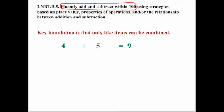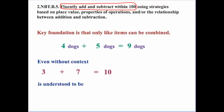For example, let's say we have 4 plus 5 equals 9. There is an implied understanding that we have to have something, for example, like 4 dogs plus 5 dogs is 9 dogs. But even without context, something like 3 plus 7 is equal to 10 would be understood to be 3 ones plus 7 ones is 10 ones. Again, all the same like items, even though there wasn't a context.